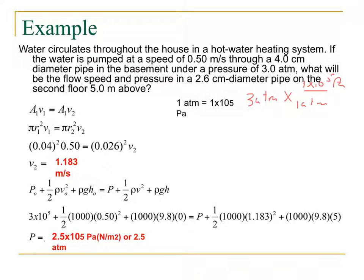And that's going to equal our 0.026 squared. And again, that's because we have our 2.6 centimeters, we have to convert over to meters. And then our velocity 2 is our unknown. So we do a simple algebraic solution, and we get our second velocity as 1.183 meters per second.